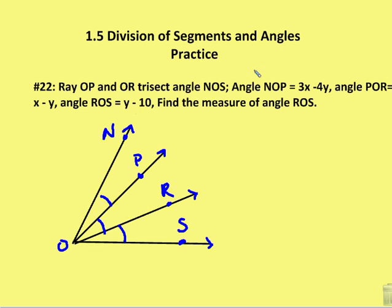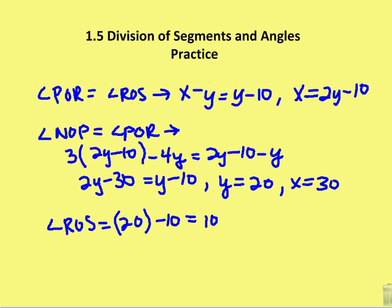We're going to set up two equations, solve for one variable, and then use substitution to find the answers. I know that angle POR is equal to ROS. So x minus y, which is POR, is equal to y minus 10. If I rewrite this in terms of x, I have x is equal to 2y minus 10.